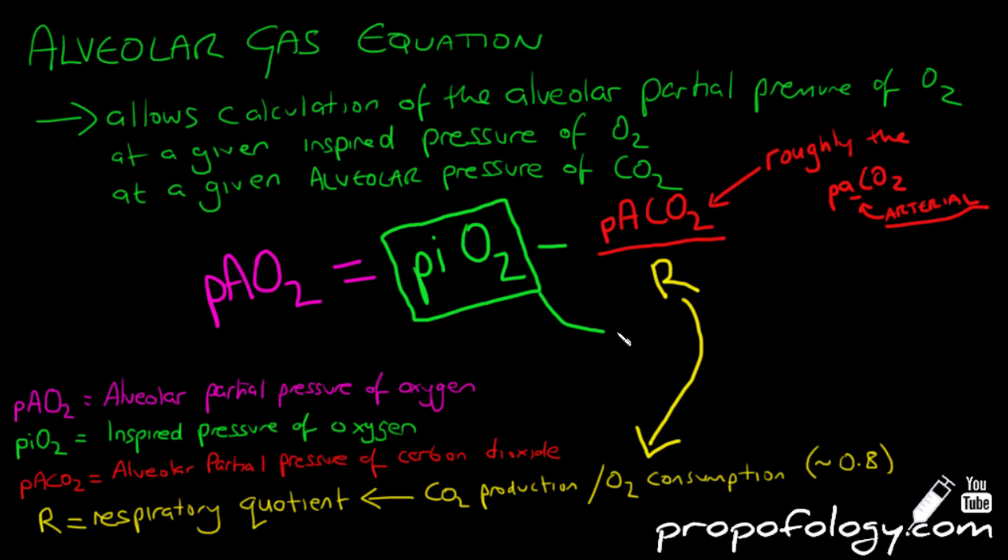So the PiO2, which is the pressure of inspired oxygen, is equal to the fraction of inspired oxygen, or the FiO2. At room air that's 0.21, multiplied then by the atmospheric pressure, take away the pressure of H2O. Atmospheric pressure at sea level is 101 kPa.